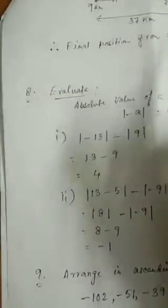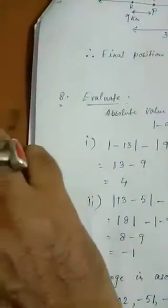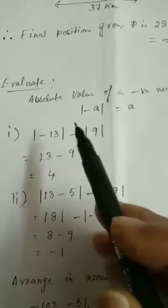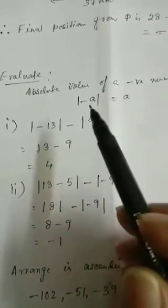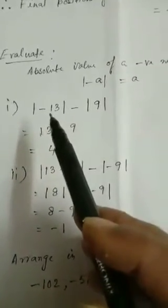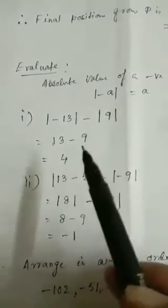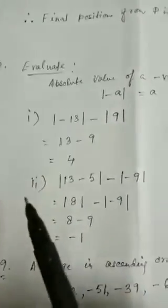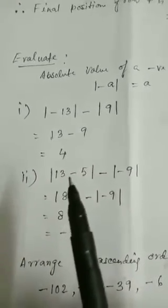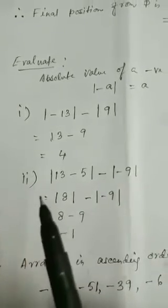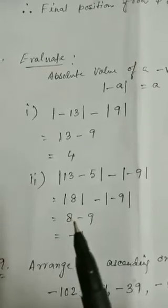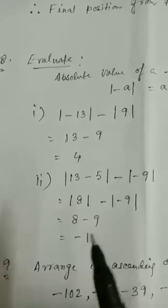Now next, question number 8 — evaluate the following. Sum 1: absolute value of minus 13 minus absolute value of 9. The absolute value of a negative number is positive, so absolute value of minus A equals A. Absolute value of minus 13 is 13, and absolute value of 9 is 9. So 13 minus 9 equals 4. Next: absolute value of (13 minus 5) minus absolute value of minus 9. You get 8 minus 9 equals minus 1.